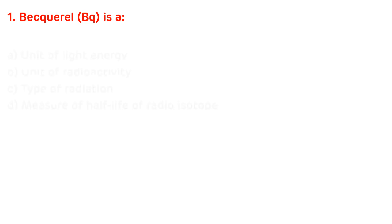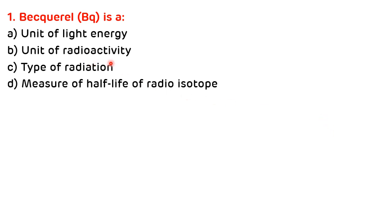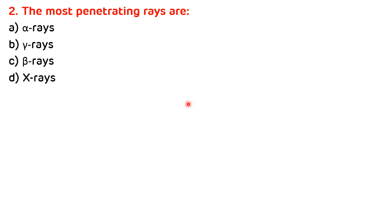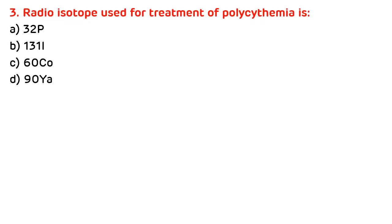Multiple choice questions: First — Becquerel is a unit of: light energy, unit of radioactivity, type of radiation, or measure of half-life? The correct answer is B — unit of radioactivity. Second — the most penetrating rays are: alpha rays, gamma rays, beta rays, or X-rays? The correct answer is B — gamma rays. Third — the radioisotope used for the treatment of polycythemia is: phosphorus, iodine, or cobalt? The correct answer is A — phosphorus.